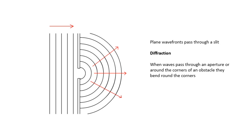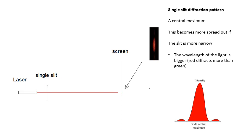When waves pass through an aperture or around the corners of an obstacle, they bend around the corners. Why this happens, you don't need to know about something called Huygens Principle, but it happens.